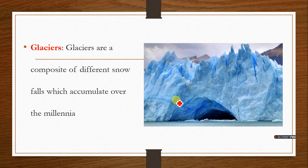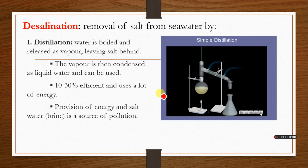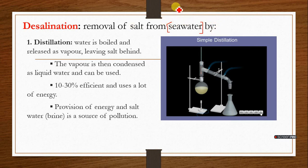Glaciers are a composite of different snowfall which accumulates over the years to form a store of fresh water. Desalination is the removal of salt from seawater. Seawater is not potable for drinking because it has a high amount of salt content. Some developed economies have devised means of purifying seawater. There are two ways in which this is done: the first is distillation and the second is reverse osmosis.